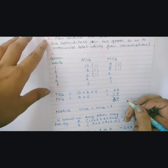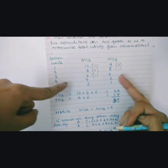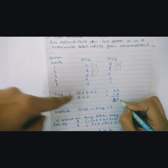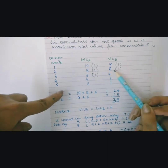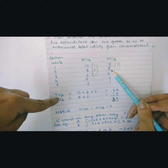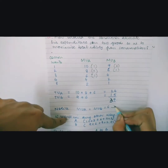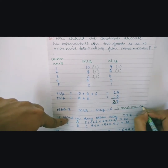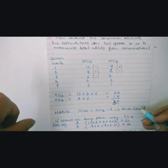You have spent all 5 rupees and attained a total utility of 39. Notice that the marginal utility of commodity A and the marginal utility of commodity B are both equal to 6. This is the condition of consumer equilibrium in the case of two commodities according to the law of equimarginal utility.